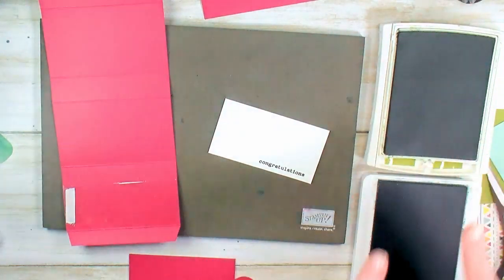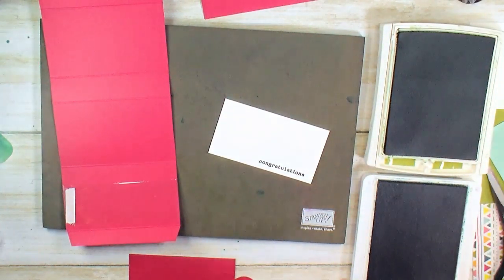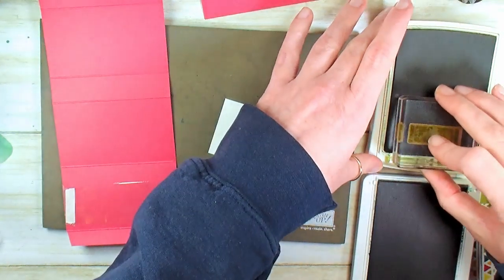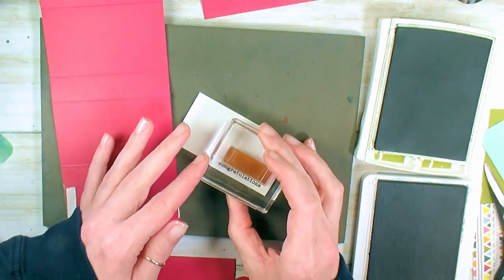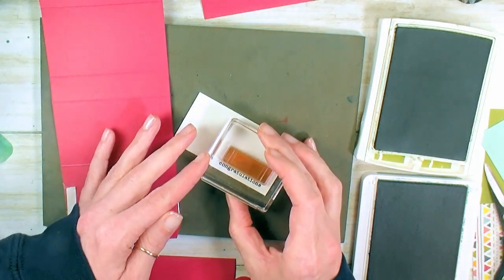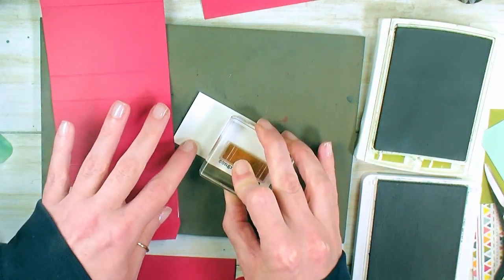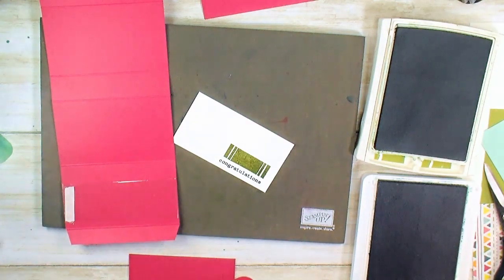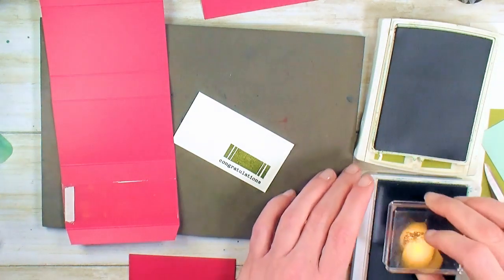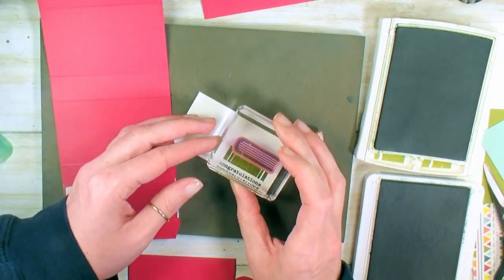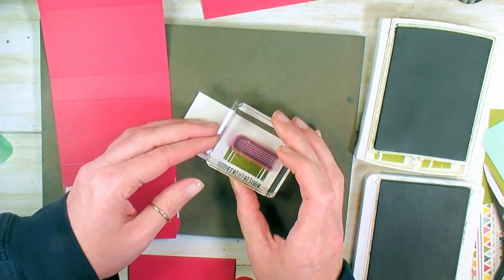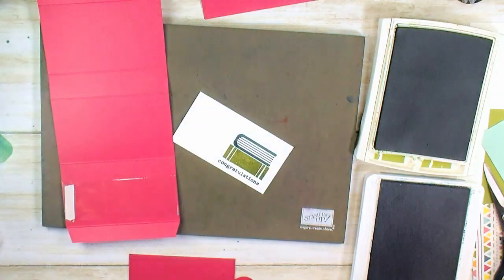So Old Olive, Pretty Peacock. Let's do a little stack of books. We want this to be very scholarly. I've got my little book spine here. We're going to stamp it above Congratulations in Old Olive. Then we've got our little page side. We're going to stamp that on top of Old Olive.